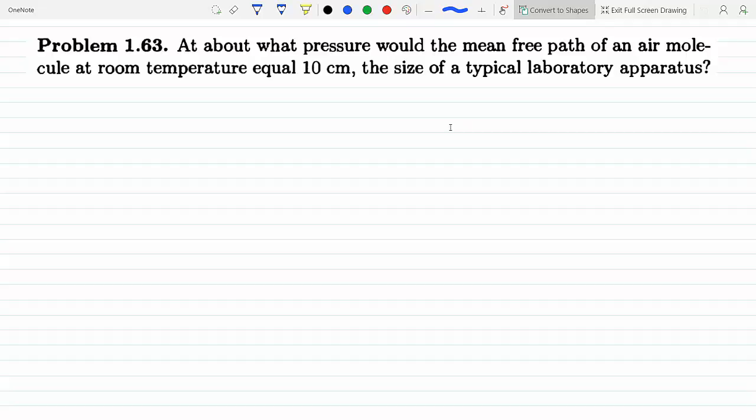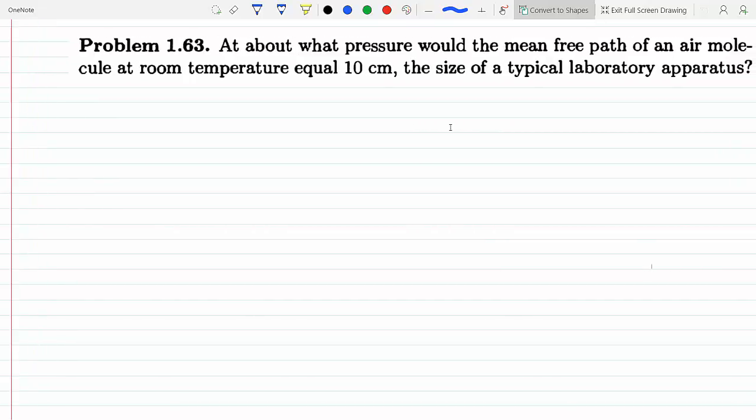In other words, the collisions would happen so frequently if the molecule that we are interested in, that's under study, was twice as wide and every other molecule were just points. So if that's the case, then the collisions would occur so frequently. If we have a molecule that has a radius of 2r...